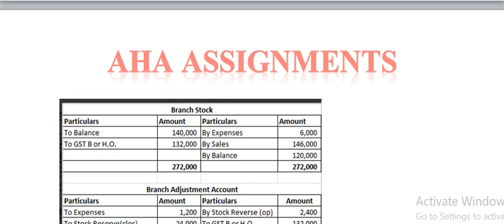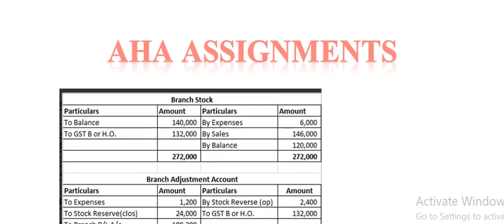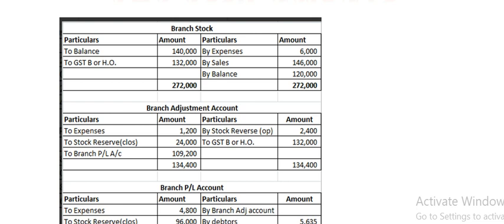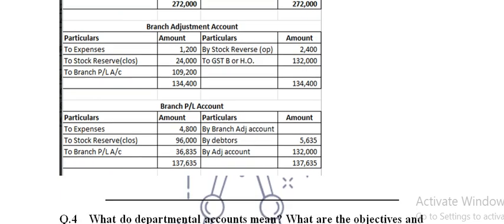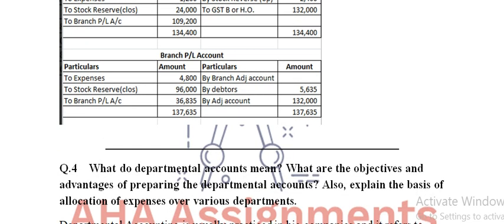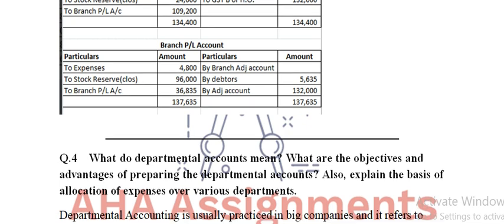Particular amount aur jo branch stock tha uska bhi hisaab hoga. Uske baad branch adjustment accounts banenge. Phir branch P&L account bhi banana hai.